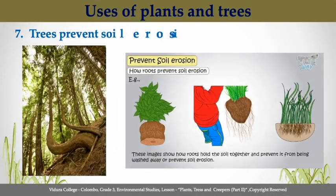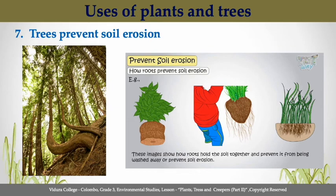Number seven, trees prevent soil erosion. A tree's large root system acts as a bind toward any loose soil surrounding the tree. The roots hold the soil in place while stabilizing the tree and improving the drainage of the soil.